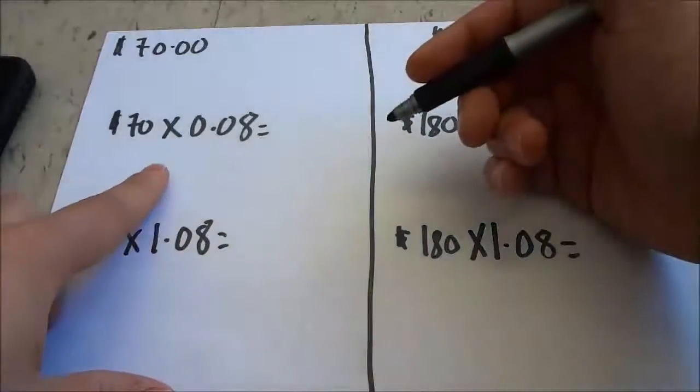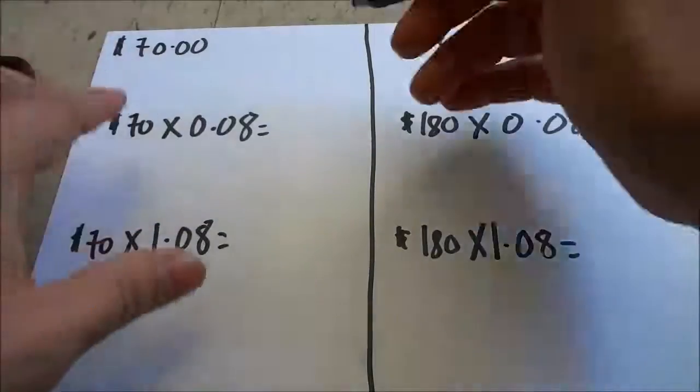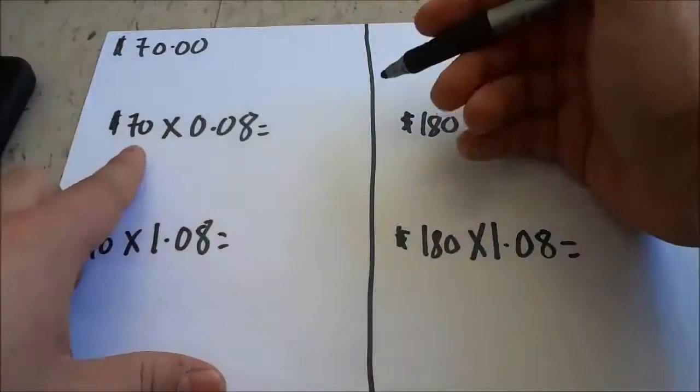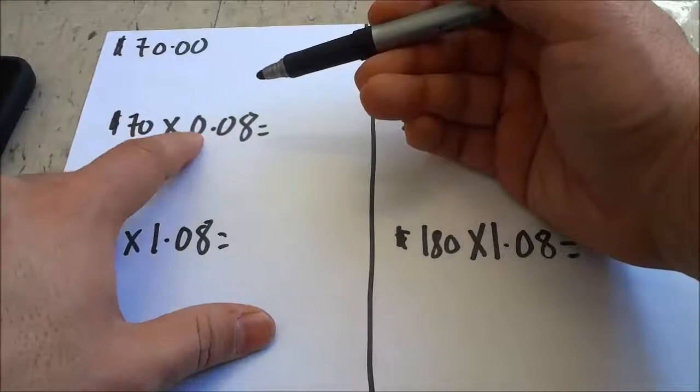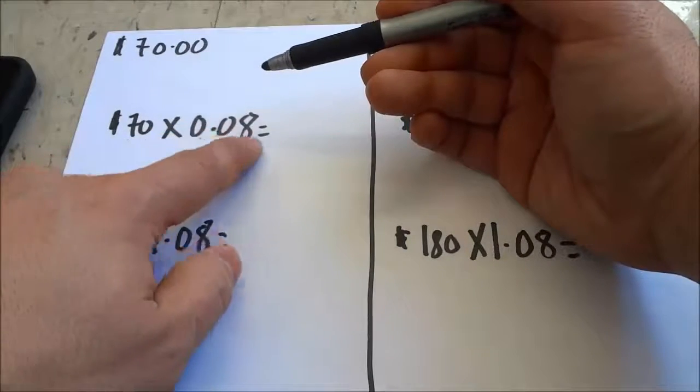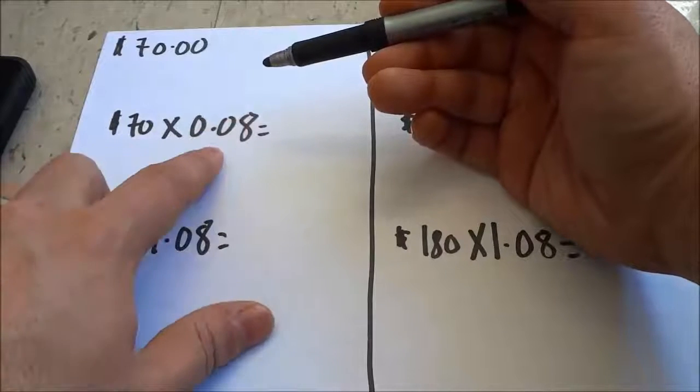To calculate sales tax by itself, to figure out just how much sales tax you're going to have to pay on the product, you multiply the price of the product by 0. and then the percentage of sales tax. For this example, I imagined we were using an 8% sales tax.